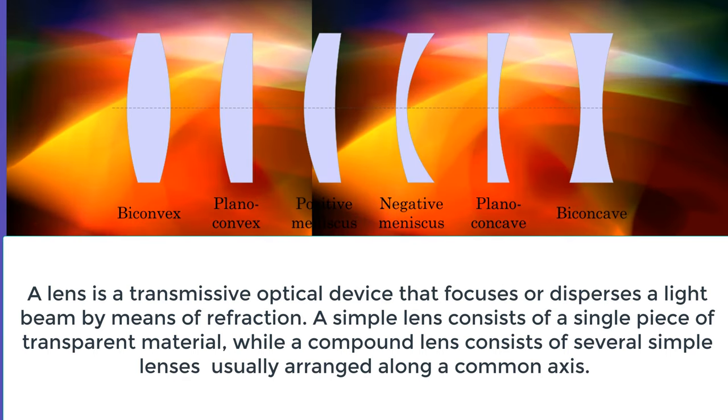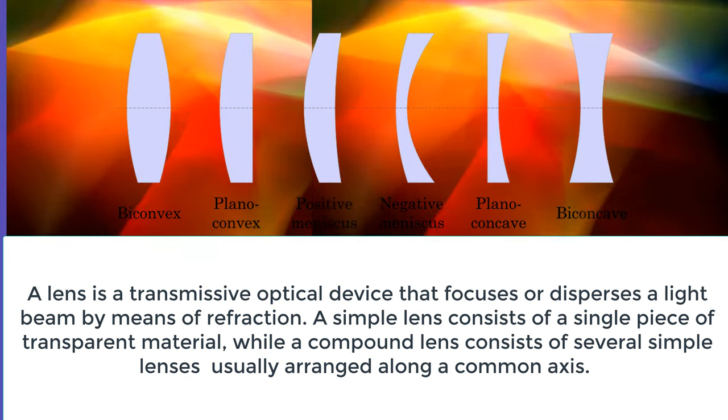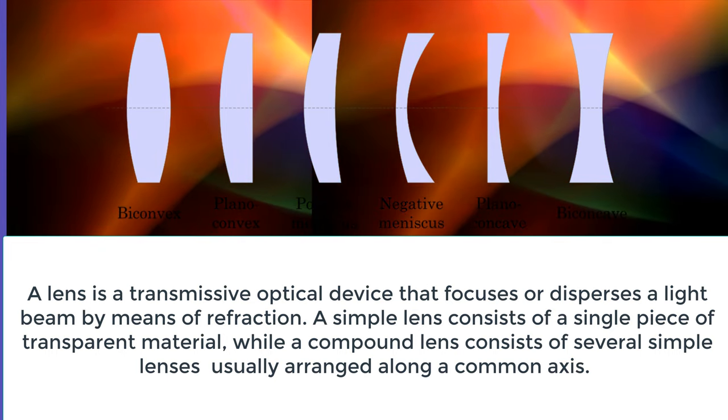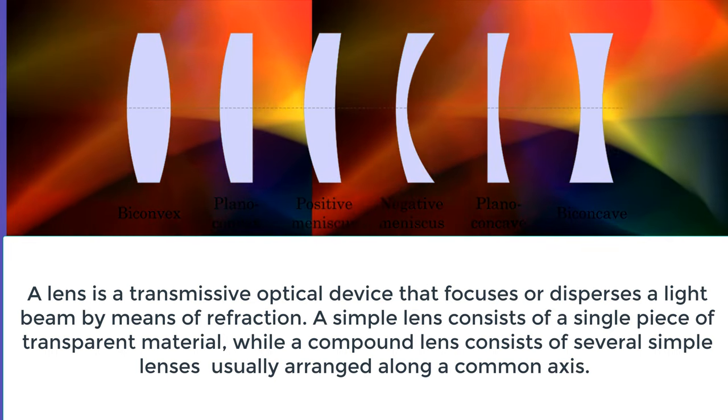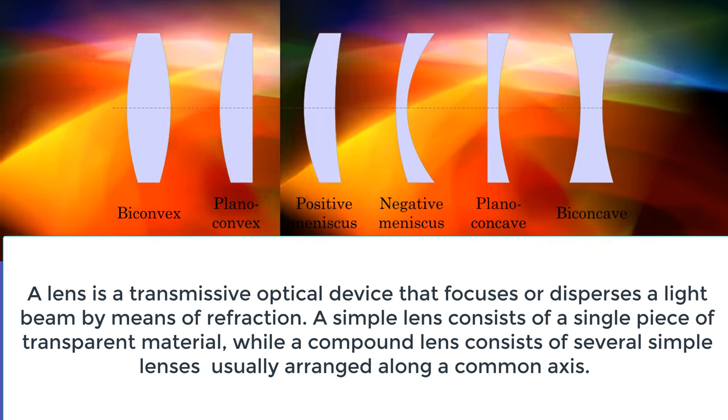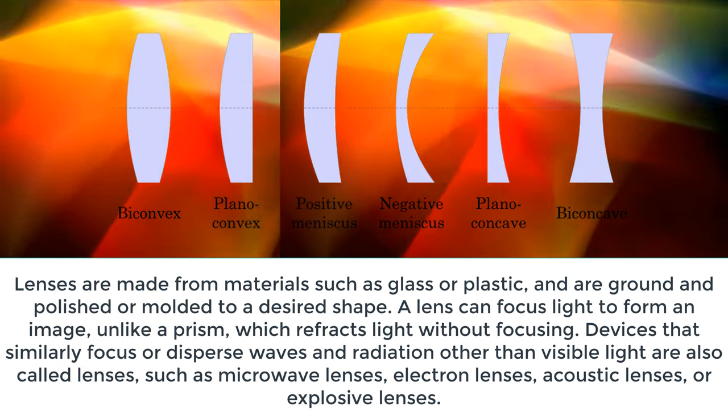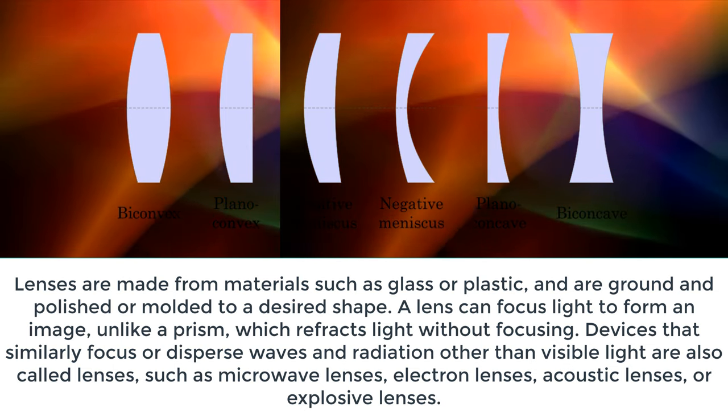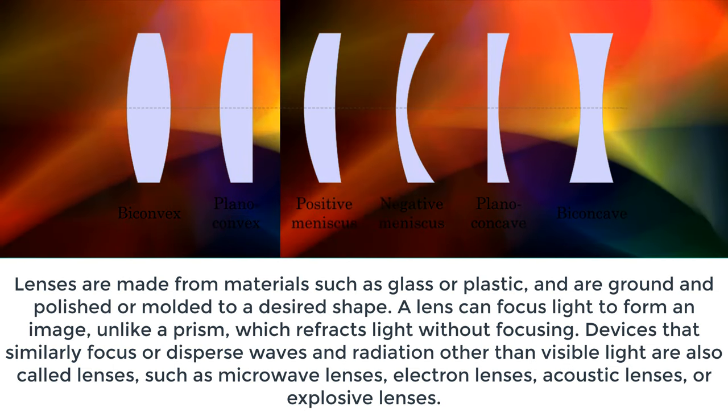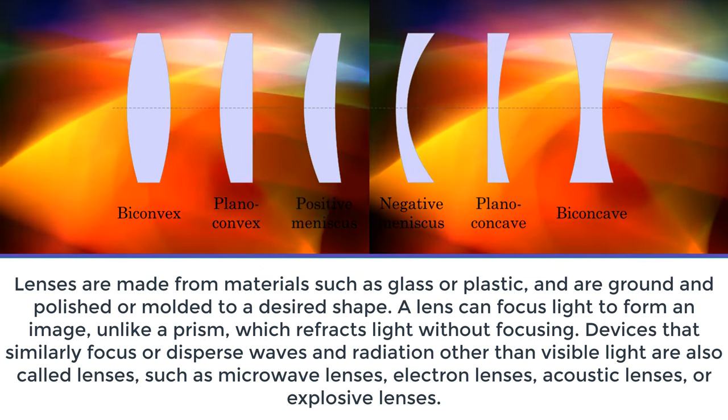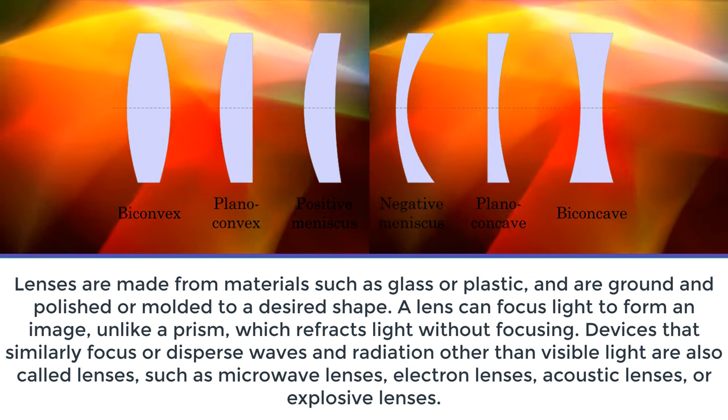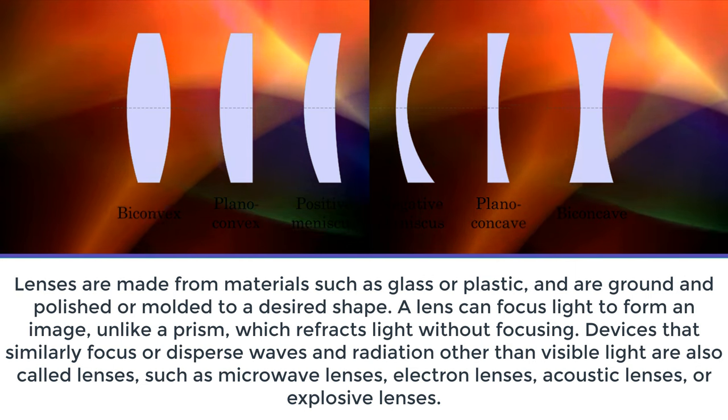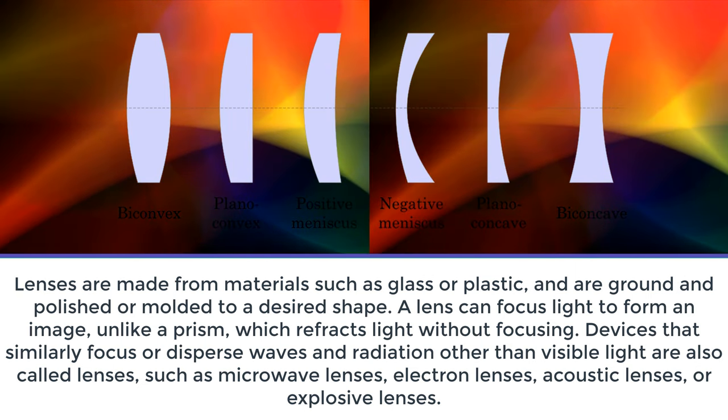A lens is a transmissive optical device that focuses or disperses a light beam by means of refraction. A simple lens consists of a single piece of transparent material, while a compound lens consists of several simple lenses usually arranged along a common axis. Lenses are made from materials such as glass or plastic, and are ground and polished or molded to a desired shape. A lens can focus light to form an image, unlike a prism, which refracts light without focusing. Devices that similarly focus or disperse waves and radiation other than visible light are also called lenses, such as microwave lenses, electron lenses, acoustic lenses, or explosive lenses.